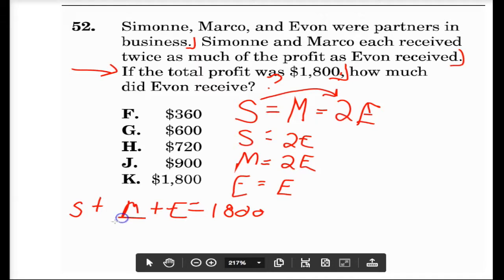But we don't want three variables. We want one. And that's what we have here. So we're going to substitute. Instead of Simone, we're going to say 2E. Instead of Marco, we're going to say 2E. And for Evan, we'll just stick with good old Evan and say E equals $1,800.